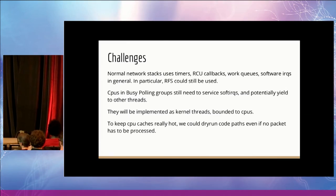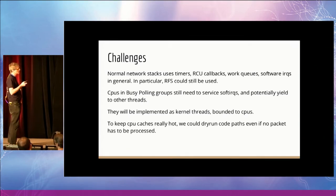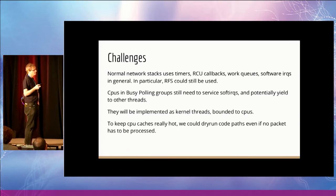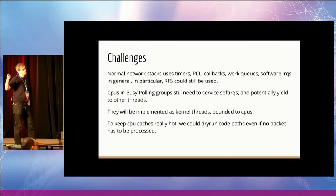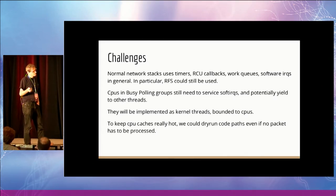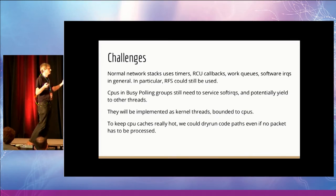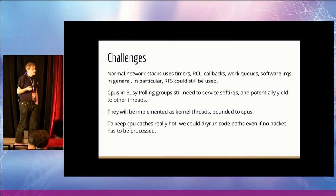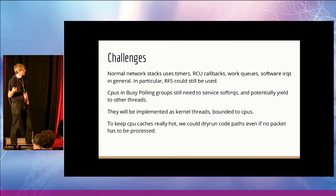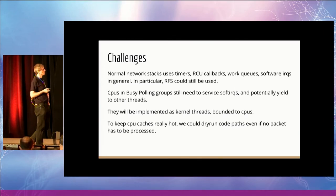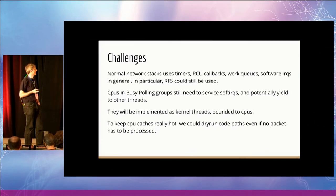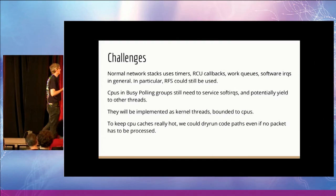There are some challenges but I think they are minor details. This busy-polling CPU would run inside a kthread so we can easily tune its priority or scheduling class. We need to service soft interrupts — when we receive a packet, the TCP stack will eventually set up a timer that could fire a few seconds later for retransmits. Timers use soft interrupts, as do RCU callbacks to free sockets, and process work queues that we also use in the networking stack.